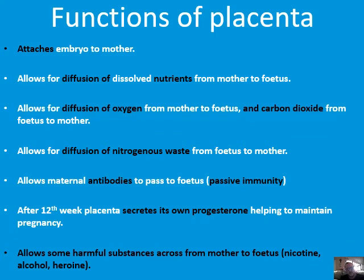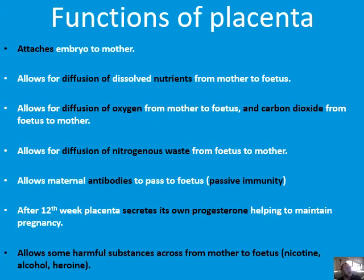The functions of the placenta include: attachment; diffusion of nutrients, oxygen, and carbon dioxide — oxygen from mother to fetus, CO2 from fetus to mother; diffusion of nitrogenous waste from fetus to mother; and importantly, it allows maternal antibodies to pass to the fetus — this is passive immunity. After the 12th week, the placenta secretes its own progesterone to help maintain the pregnancy. If it doesn't produce progesterone, the pregnancy will terminate.